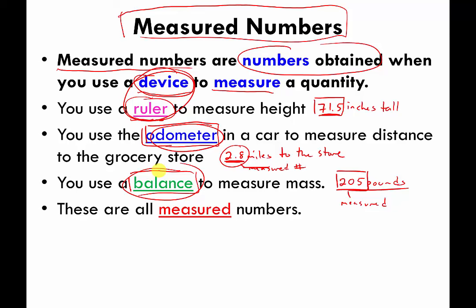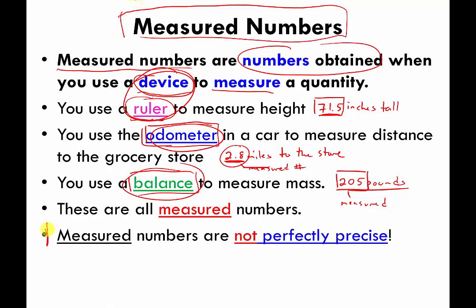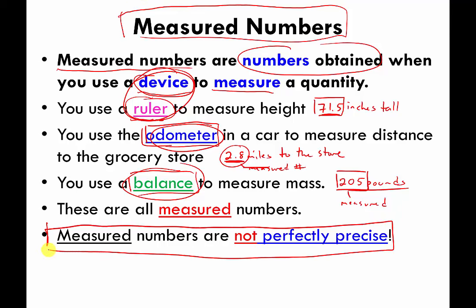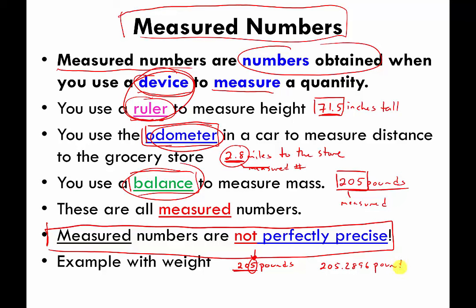The key point is that measured numbers are never perfectly precise. Or maybe a better way of saying that is: the only time measured numbers are perfectly precise is when you get lucky. For example, I said I weighed 205 pounds. I probably don't weigh exactly 205 pounds — it's just that my balance, my scale, is only good enough to tell me down to the single pound. It's certainly possible that I weigh 205.2896 pounds or something like that, but my scale just isn't good enough to tell me those digits past the decimal place.